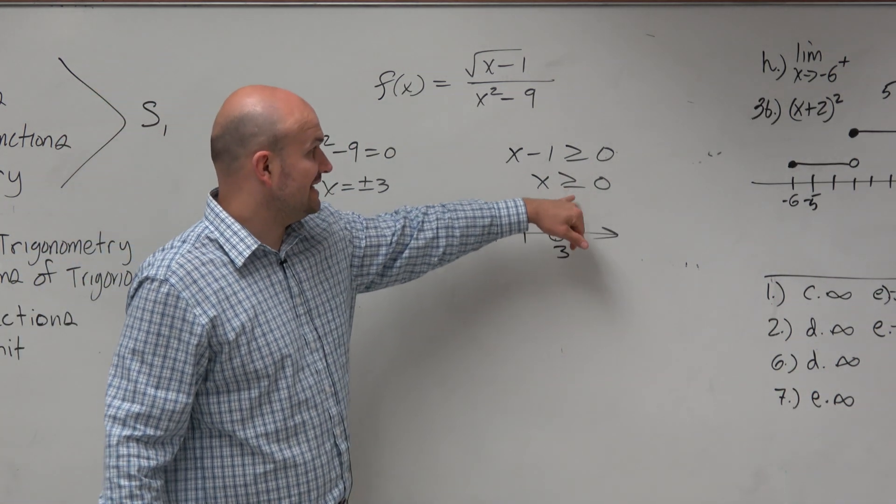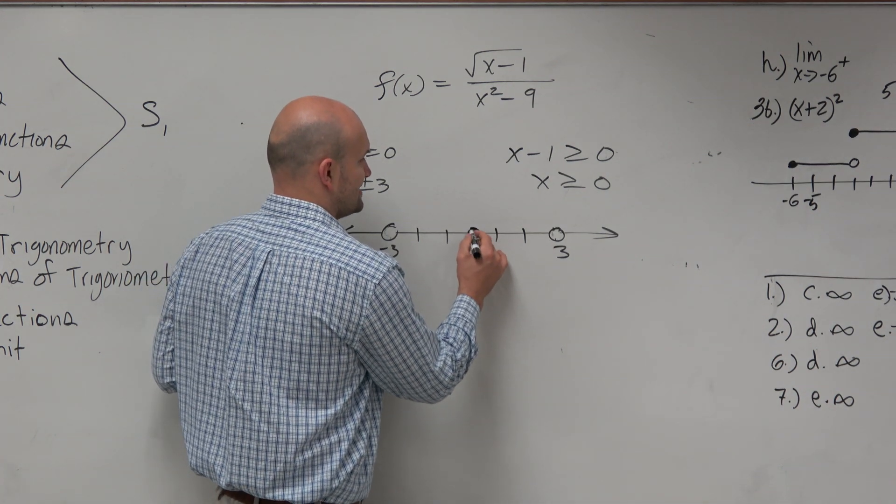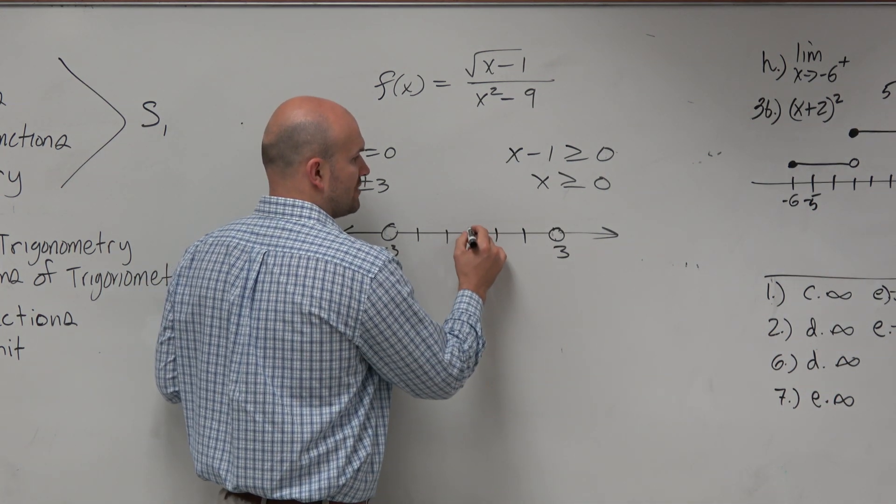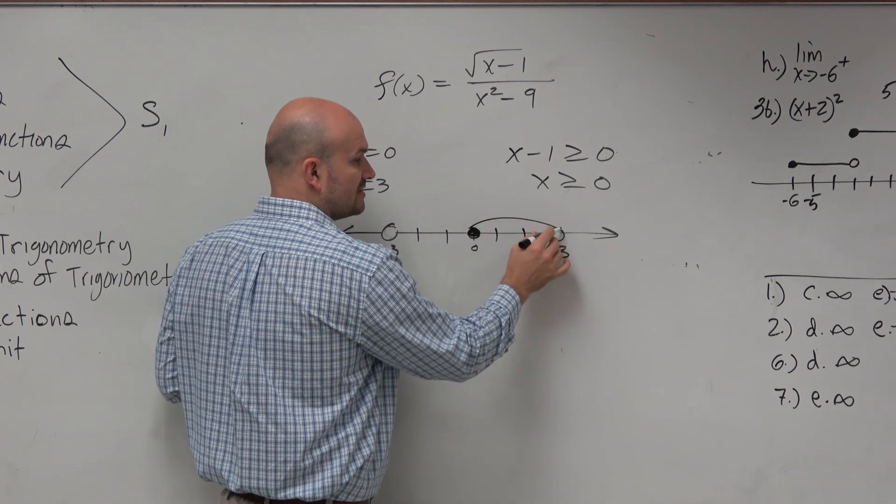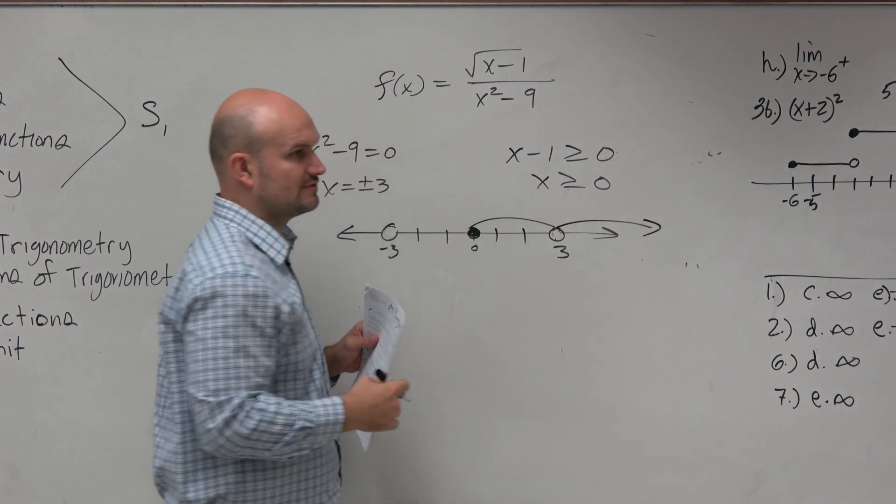Then we said x can equal 0 but has to be greater than that. So it has to be greater than 0, can't equal 3, and then continues to infinity.